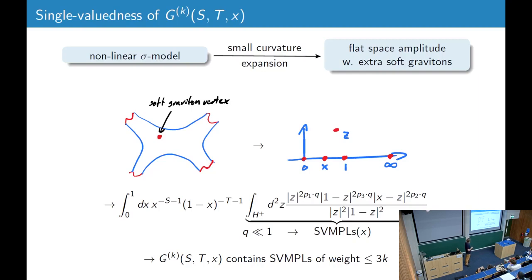and for flat space amplitudes, this just gives expressions like this, where q is the mass of the graviton. And now if we do the soft expansion, we do an expansion in small q. Such integrals, because it's a two-dimensional integral with these absolute values, gives you only single-valued multiple polylogarithms. And so in detail, the result is that the k-th curvature correction contains single-valued multiple polylogs of weight up to 3k.